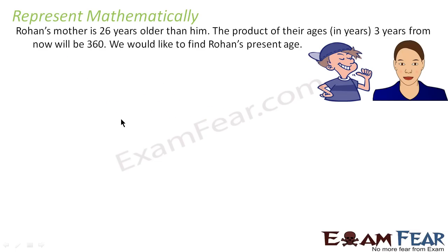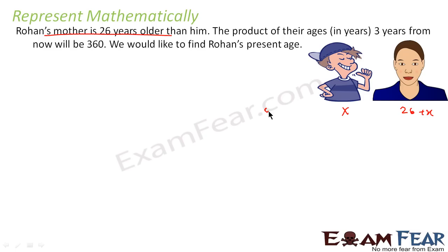Here is one more scenario. Rohan's mother is 26 years older than him. The product of their ages 3 years from now will be 360. We have to find Rohan's present age. Let Rohan's present age be x, so his mother's present age is x plus 26.